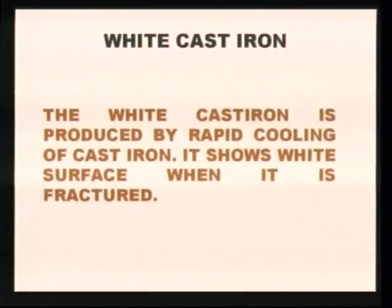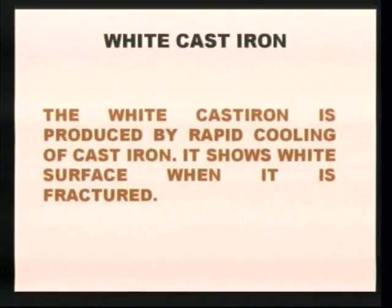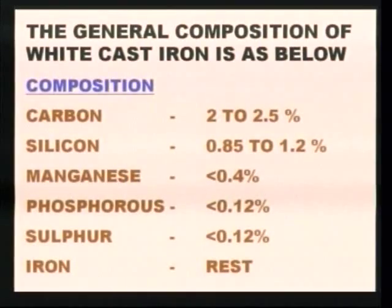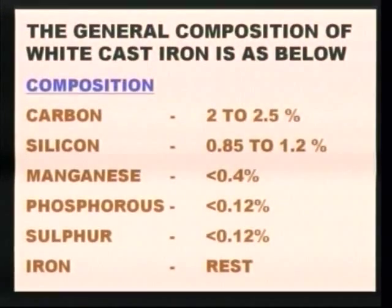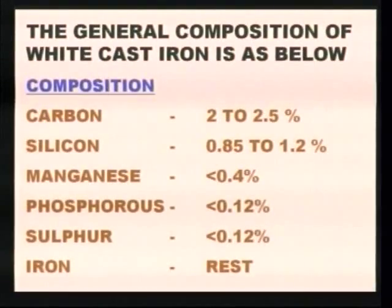The next type is white cast iron. White cast iron is produced by rapid cooling of cast iron, and it shows a white surface when fractured. Its general composition is: carbon 2 to 2.5 percent, silicon 0.85 to 1.2 percent, manganese less than 0.4 percent, phosphorus less than 0.12 percent, sulphur less than 0.2 percent, and the remaining is iron.